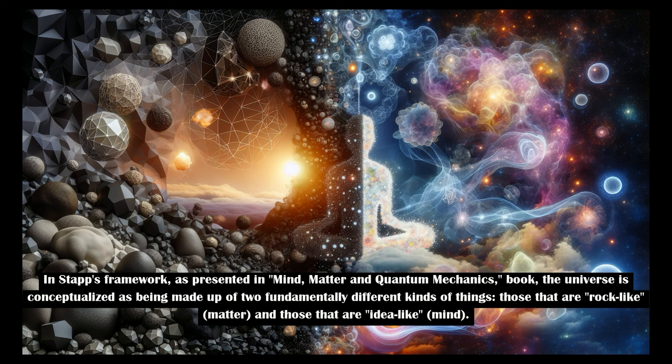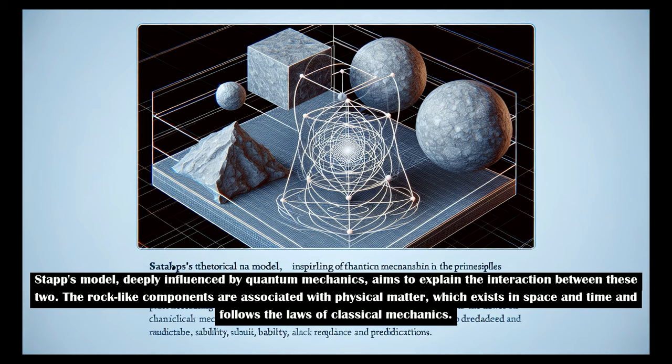In Stapp's framework, as presented in his book Mind, Matter, and Quantum Mechanics, the universe is conceptualized as being made up of two fundamentally different kinds of things: those that are rock-like, matter, and those that are idea-like, mind.